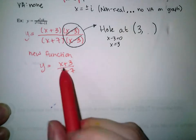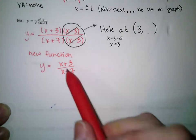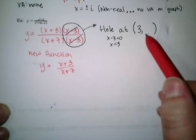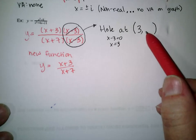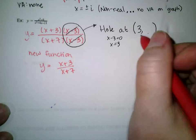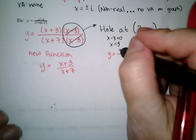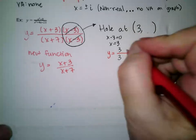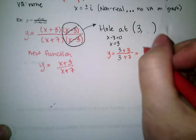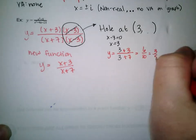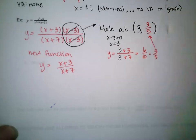After canceling, the new simplified function is y equals x plus 3 over x plus 7. This function is the same as the original except the hole has been removed. When we graph it, we put a hole at an ordered pair. To find the y-coordinate, we substitute x equals 3 into the simplified function: 3 plus 3 over 3 plus 7 equals 6 tenths, or 3 fifths. So the hole is at the point 3 comma 3 fifths.